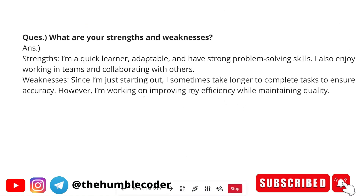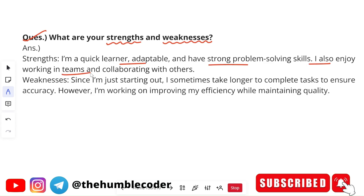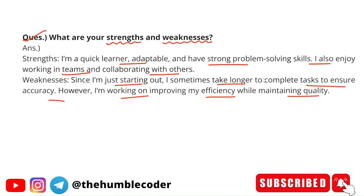Next question: What are your strengths and weaknesses? For strengths you can say: 'I am a quick learner, adaptable, and have strong problem-solving skills. I also enjoy working in teams and collaborating with others.' For weakness: 'Since I'm just starting out, I sometimes take longer to complete tasks to ensure accuracy; however, I am working on improving my efficiency while maintaining quality.' Notice the weakness also shows a good quality — focus on accuracy — and always mention that you are working on improving it.